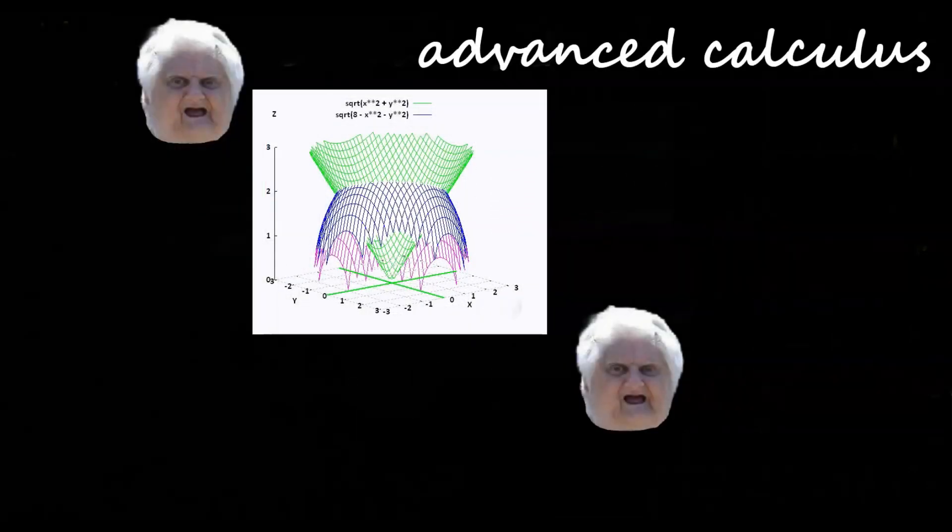Similar to calculus 2, in advanced calculus we ask the question of how to find the volume of irregular shapes such as this one here. We're usually used to finding volumes of simple objects such as cylinders or prisms, but not these.